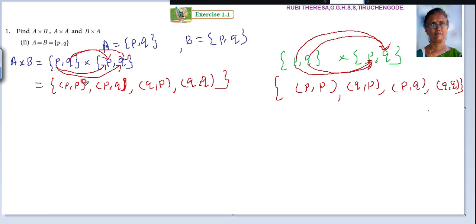Check the number of pairs: four. Is it correct? Yes, two times two equals four. The cardinality of A is 2 and the cardinality of B is 2, so we get 4 pairs total. This is correct.